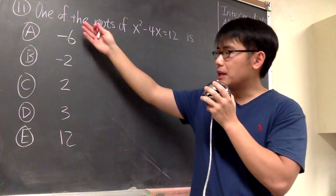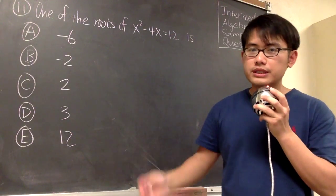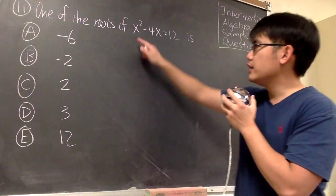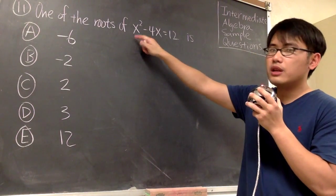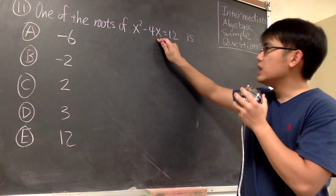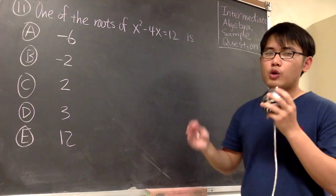So here we have 5 possible x-values, and what we need to do is pick one of them and plug into the x-value in the original equation, and then work out the computation. If we end up with 12, then we know that's the answer.